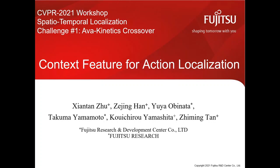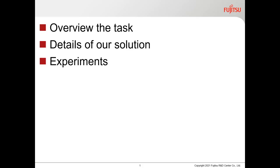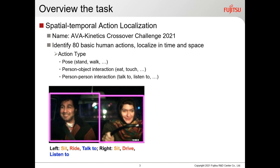Hello everyone. I'm Shiantan Zhu from Fujitsu. It's my honor to introduce my report on spatial temporal localization for the AVA Kinetics Crossover Challenge. My report topic is Context Filter for Action Localization. I will introduce my report from three aspects: first, overview the task; second, introduce details of our solution; third, give our experiments. This is a spatial temporal action localization task — the challenge is to localize persons in time and space, covering three kinds of actions: pose, person-to-object, and person-to-person interaction.